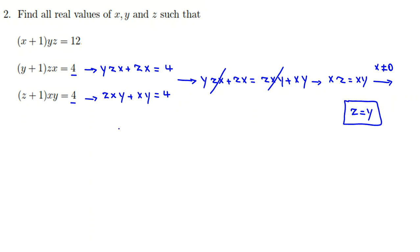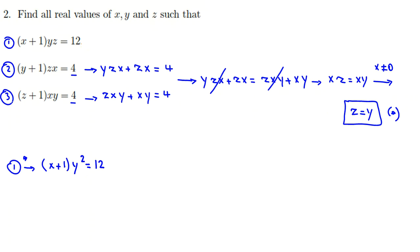Now we use substitution — replacing all z with y throughout the equations. The first equation becomes (x+1)·y² = 12 (call this ★). The second equation becomes (y+1)·yx = 4. The third equation also becomes (y+1)·xy = 4, confirming consistency. We now have two equations in two variables.